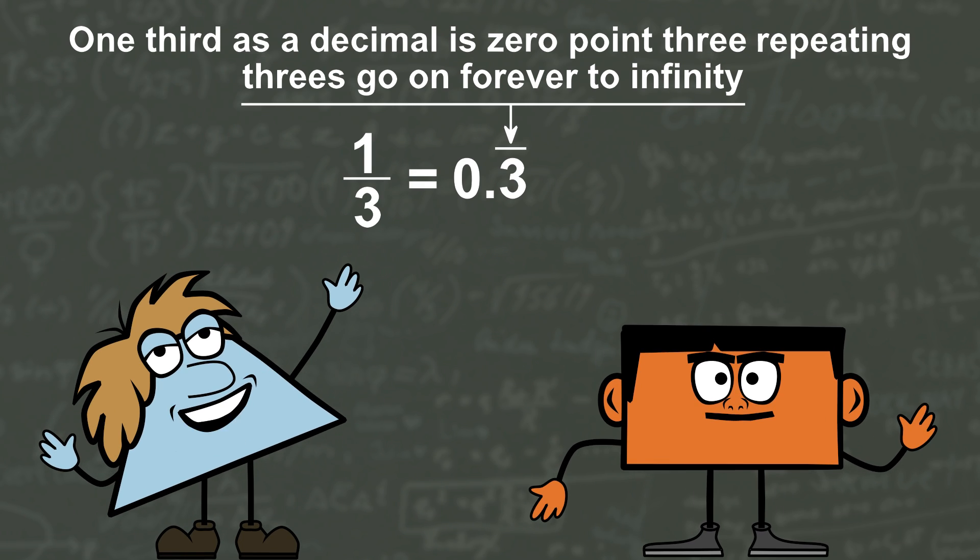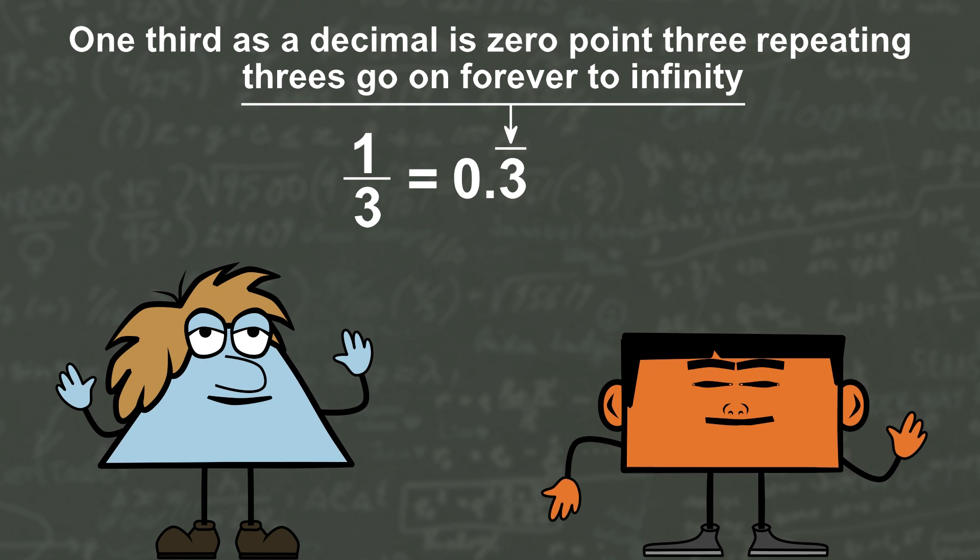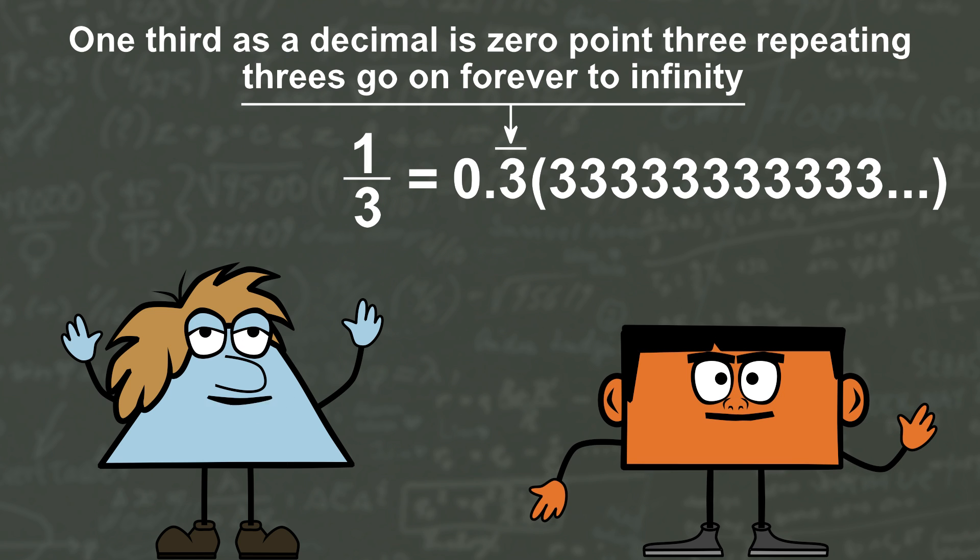One third as a decimal is zero point three. Repeating threes go on forever, to infinity.